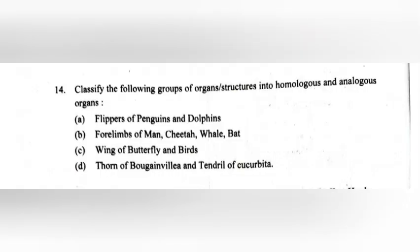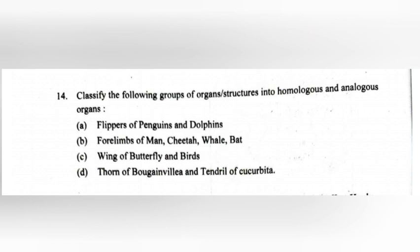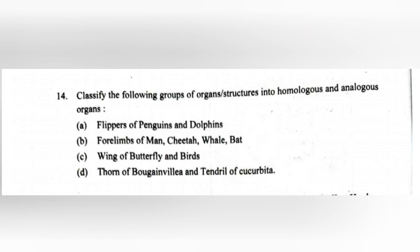14. Classify the following groups of organs into homologous and analogous organs. Answer: Homologous organs — thorns and spines in villa and tendrils in cucurbits; four limbs of man, cheetah, whale, and bat. Analogous organs — wings of butterfly and birds; flippers of penguins and dolphins.